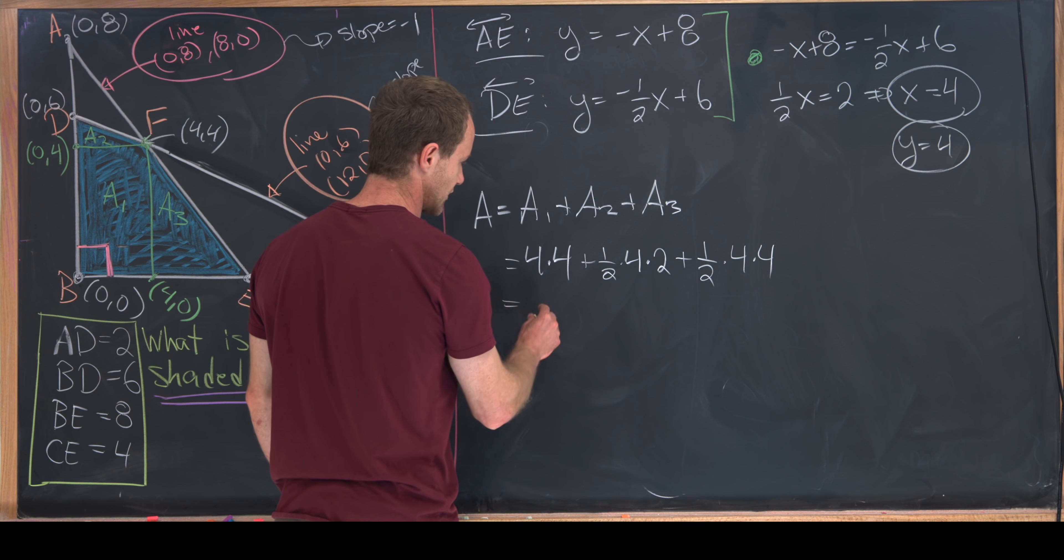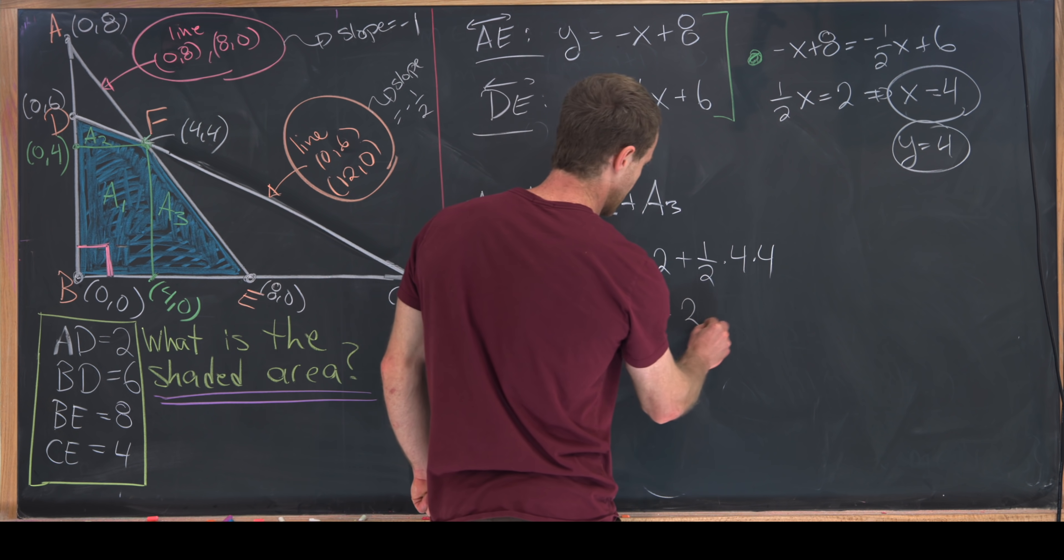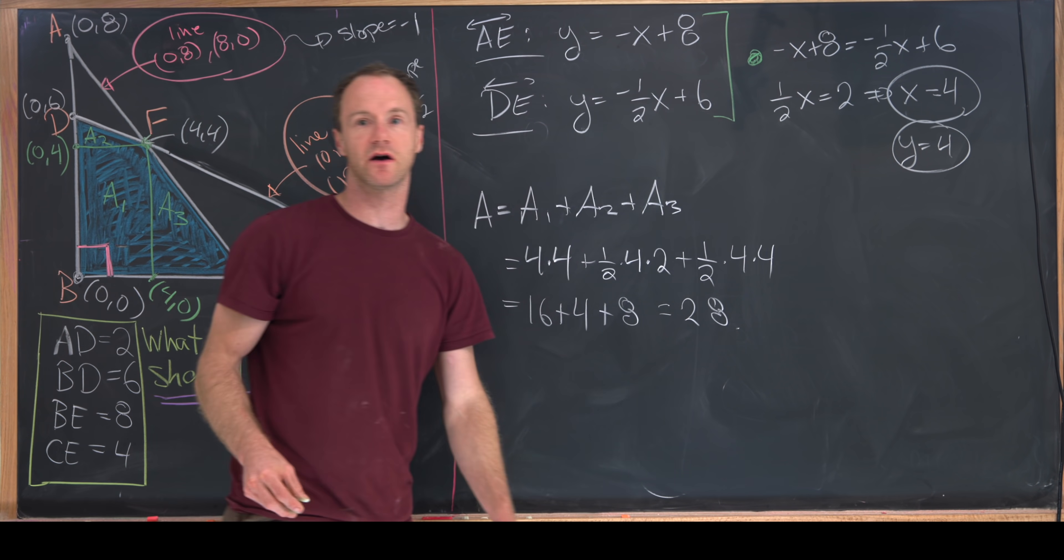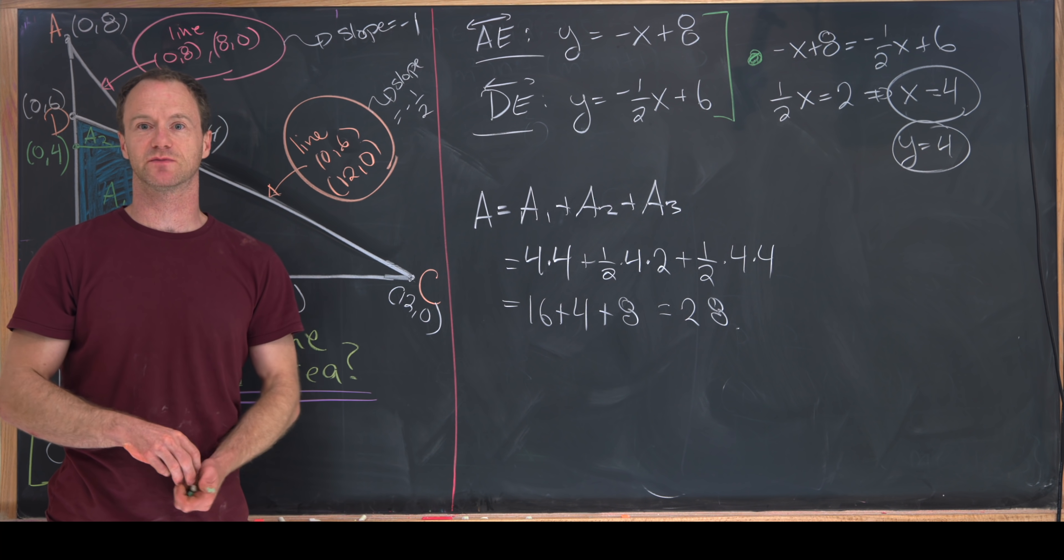Now putting this all together, we see that we have 16 + 4 + 8, or 28 for the area of our shaded region. And that's a good place to stop.